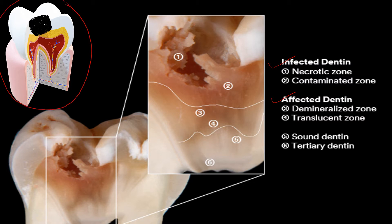The first area affected by caries is the enamel, as it is the outermost layer of the tooth. The next is the dentine — the yellow portion here. The last area affected is the pulp. When the caries lesion is limited to the dentine, we call it carious dentine. This carious dentine has various layers or zones, which are nothing but infected dentine and affected dentine.